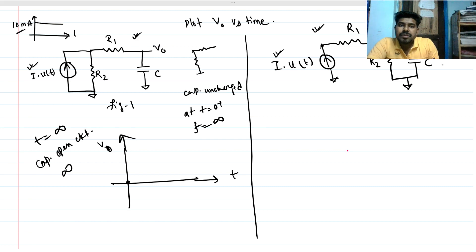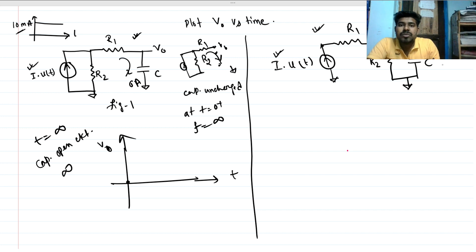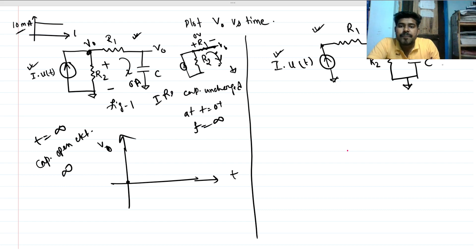With the capacitor open circuit, and this is our current, V-out is measured with respect to ground. There is no current flowing through the outer branch — the R1 and C branch — at steady state. So the voltage drop across R1 is zero, meaning R1 is effectively a short circuit. The output voltage at steady state is the voltage drop across R2, which is I times R2.